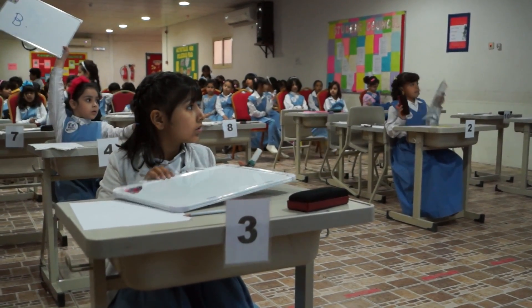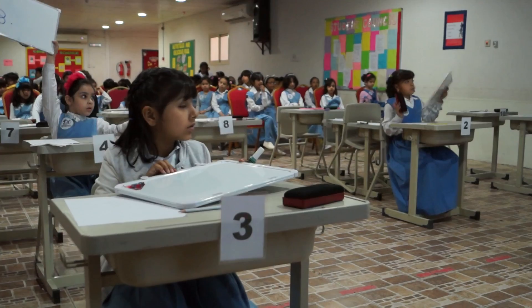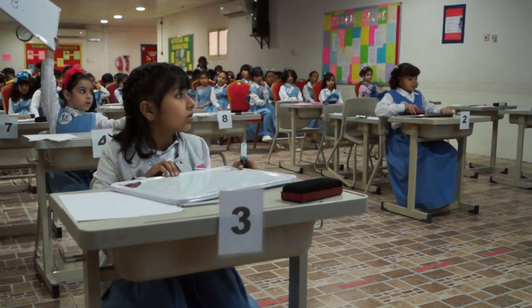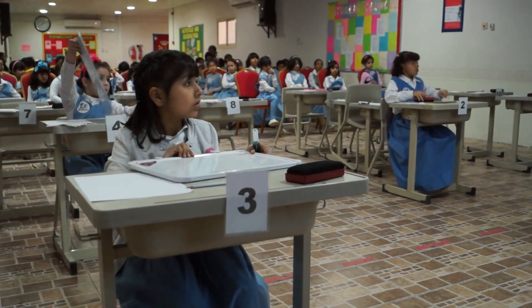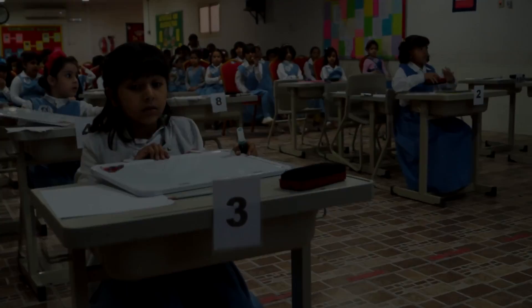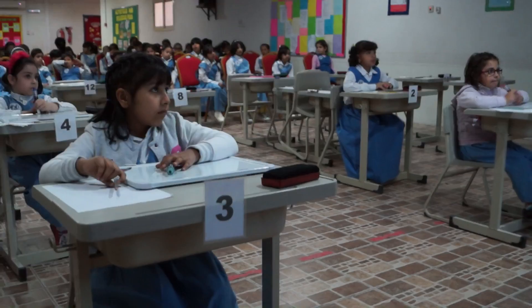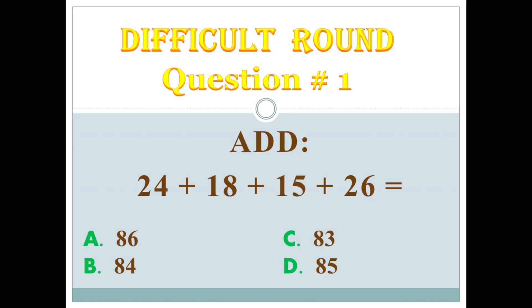So everybody is correct except number 3. The correct answer is D. So all of them are wrong. Add: 24 plus 18 plus 15 plus 26. Again, add: 24 plus 18 plus 15 plus 26.